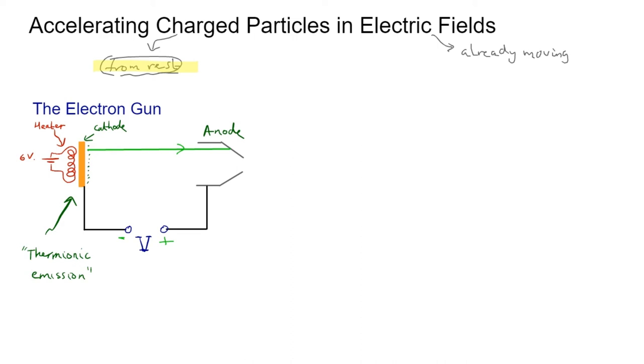A lot of them smash into the anode, but some zoom through the gap. In reality, it's more sophisticated with focusing devices and all sorts, but you get the idea. You end up with an electron beam. We've accelerated charged particles using an electric field. To find out how fast these particles are going, we'll use energy.